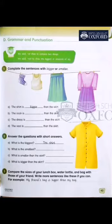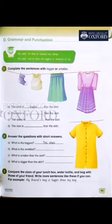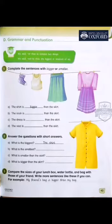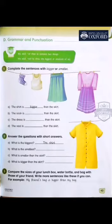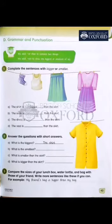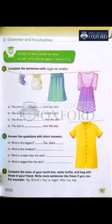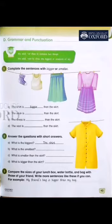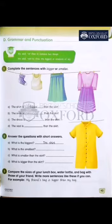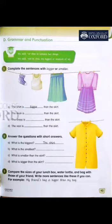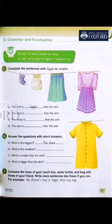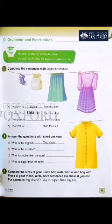First of all, we will tell whether it is big or small. Then, if there are two things, we add ER. Shirt is big, so we add ER because they are two things. Similarly, B: 'The socks are dash than the skirt.' The socks are small, and we compare two things, so what do we add? ER. Very good.